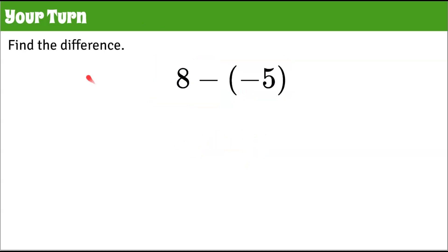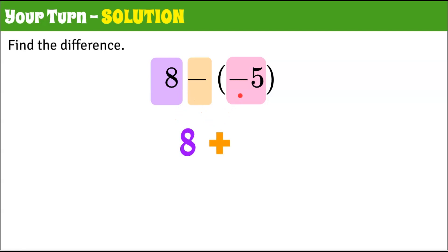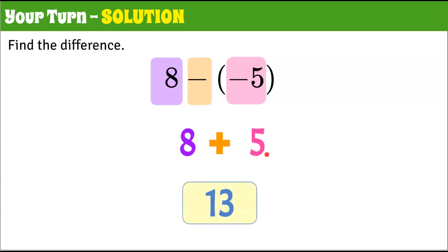Here's one more. Find the difference: eight subtract negative five. Pause here and come back when you're done. Welcome back. Using keep, change, opposite: keep eight, change to addition, and the opposite of negative five is positive five. Eight add five is positive 13.